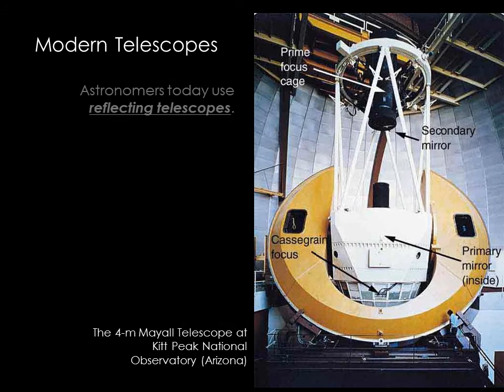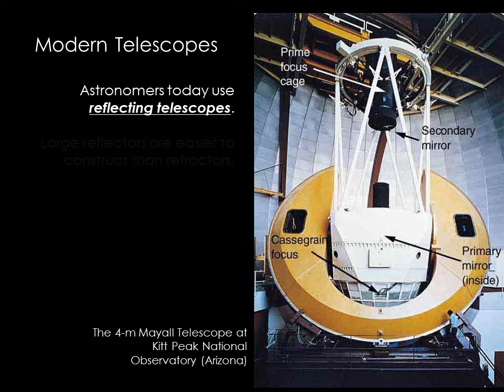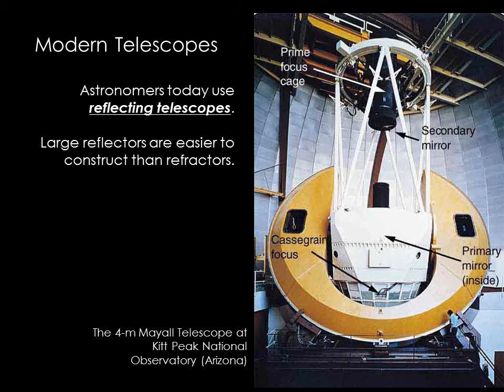Nearly all the telescopes used in current astronomical research are reflectors. Astronomers want the largest telescopes possible, and refracting telescopes are difficult to make large. A lens has to be perfect on both sides, and a mirror only has to be perfect on one side. Also, an enormous, clear, high-quality piece of glass gets very heavy quickly.